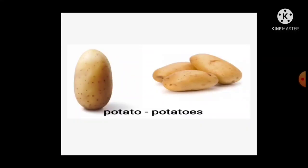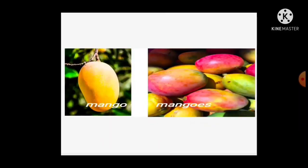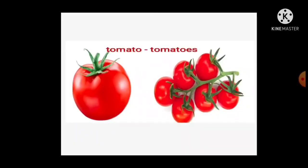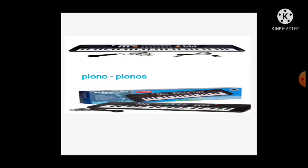Words ending in O take ES. Potato — potatoes; mango — mangoes; tomato — tomatoes (we add ES). But piano — pianos and bamboo — bamboos take only S.